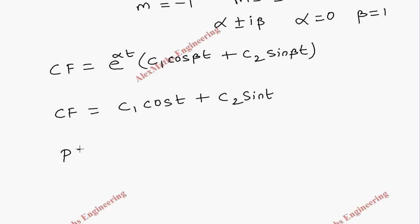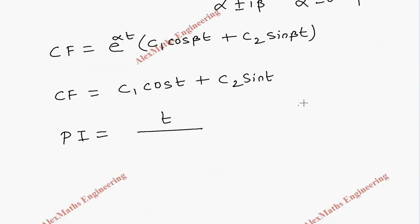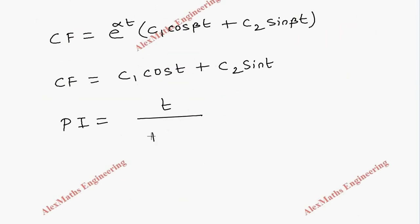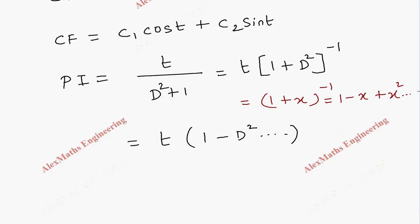Now for the particular integral, the right-hand side function is t. So the PI is t divided by (D squared plus 1), which we rewrite as t times (1 plus D squared) to the power minus 1. Expanding using the formula (1 plus x) to the minus 1 equals 1 minus x plus x squared minus ..., and since t is differentiable only once, all higher powers are ignored. So PI equals t times (1 minus D squared), and since D squared of t equals 0, we are left with PI equals t.